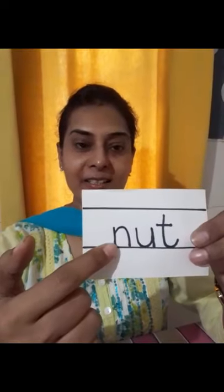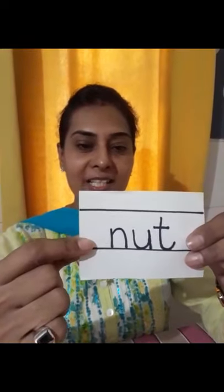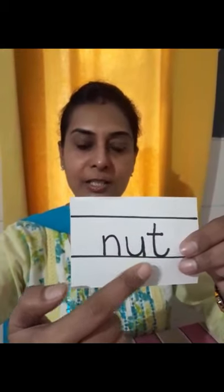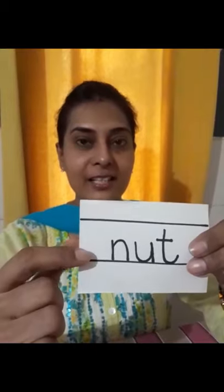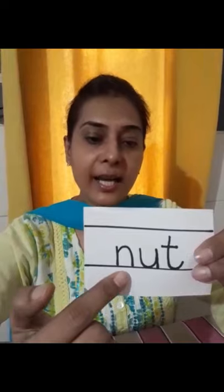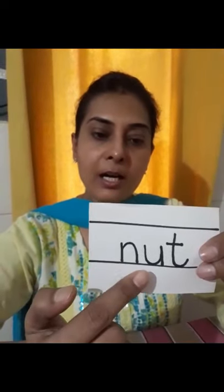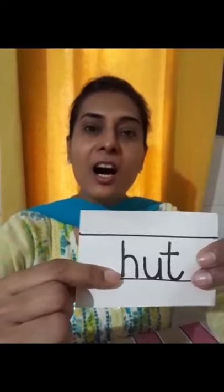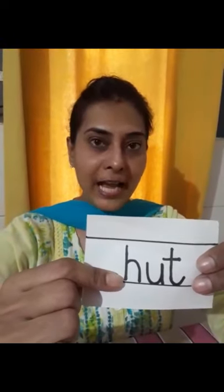The first word is 'nut'. When we add the letter N to 'ut', it becomes 'nut'. Let us see the phonic sound of N — N says 'n'. So N + ut, together becomes 'nut'.